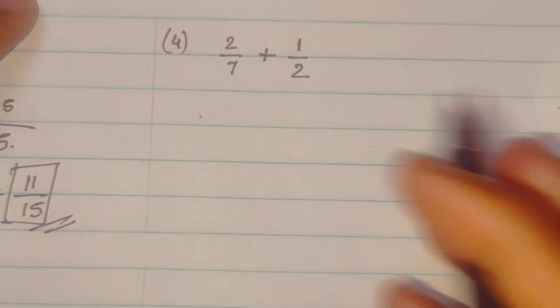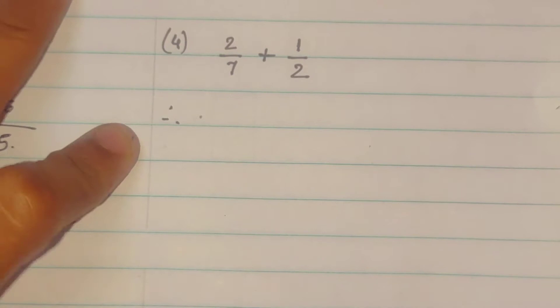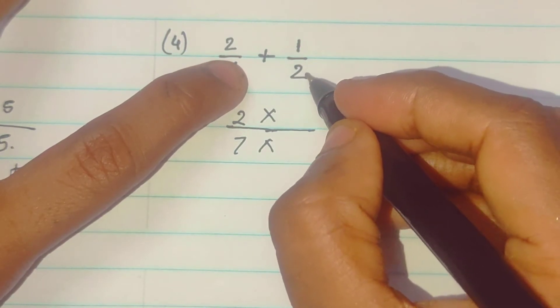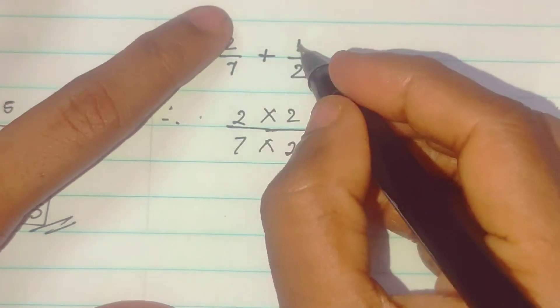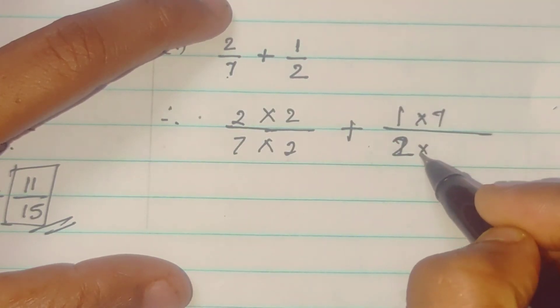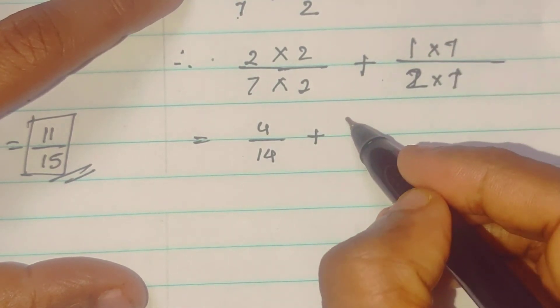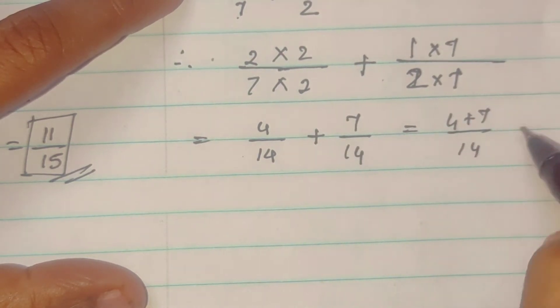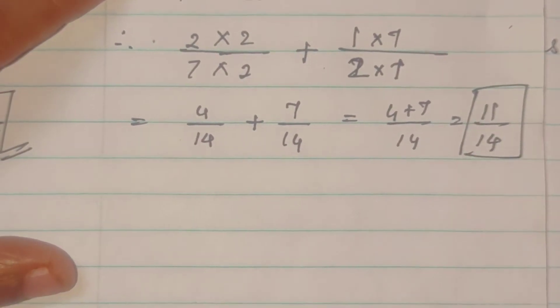Then, fourth sums. Again, same. Both the denominates are totally different. So, what we will do? We cross multiplication. We will do cross multiplication. 2 upon 7. 2 upon 7 multiply hooga. 2 se. So, yeh plus or 1 upon 7 yeh ni. Sorry, 1 upon 2. 7 seh multiply hooga. Okay? So, 2 2 2 is a 4. 7 2 is a 14. 1 7 is a 7. 2 7 is a 14. 4 plus 7 upon 14. 11 upon 14. So, this is the answer.